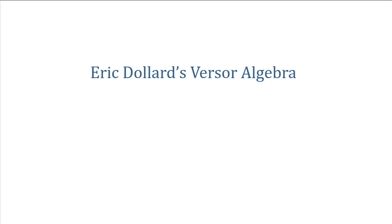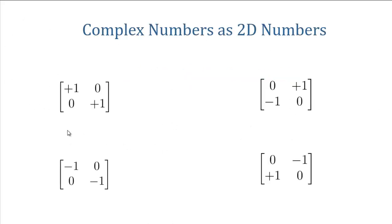In order to convert Eric Dollard's verser algebra to the 2x2 matrix format, we need to understand these four 2x2 matrices. Eric Dollard refers to them as coefficients and I refer to them as identities. These 2x2 matrices are functionally identical to what Eric Dollard is calling a coefficient. So this is a 2x2 matrix, and this is a 2x2 matrix.